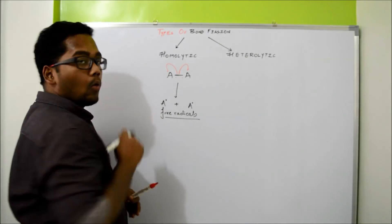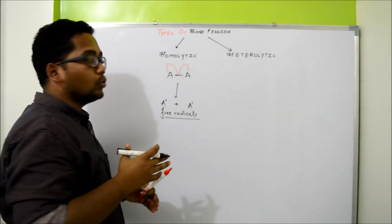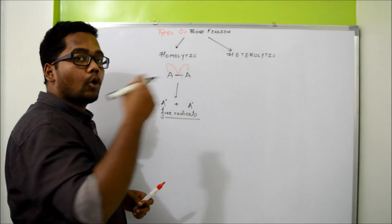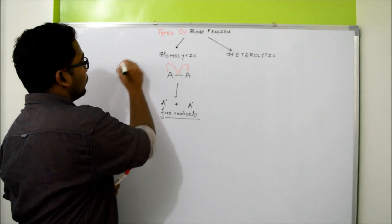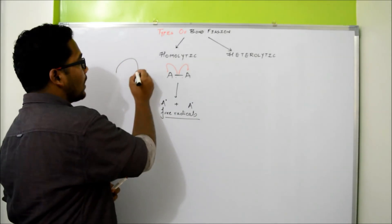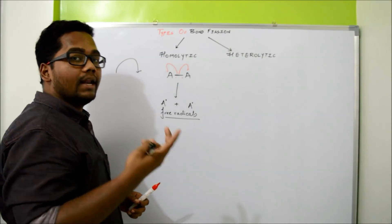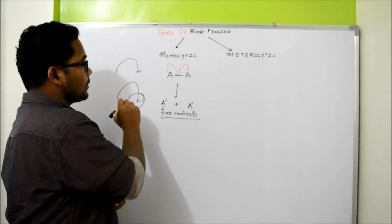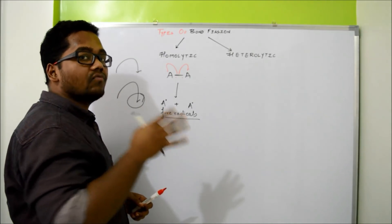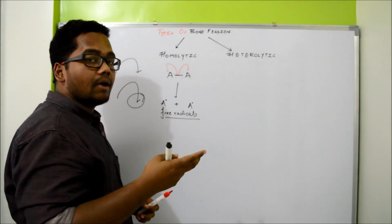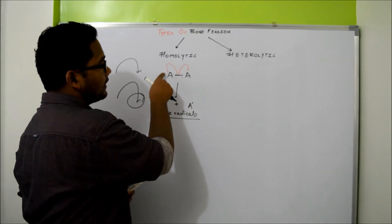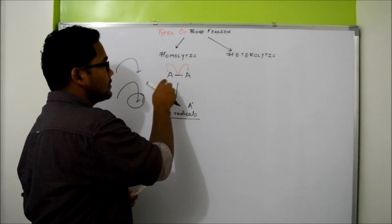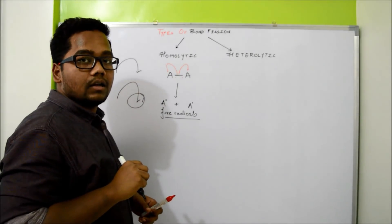If you look at the type of arrows drawn here, these are called curvy arrows, which are mainly shown to represent the flow of electrons moving from the source to the point where you drop your electron. If it is a completely full-barbed arrow, it represents a transfer of two electrons. If you put a half-barbed arrow, it represents that only half of the electrons are transferred. In homolytic bond fission, you put only a half-barbed arrow, meaning out of the two electrons, one is taken by each A atom.